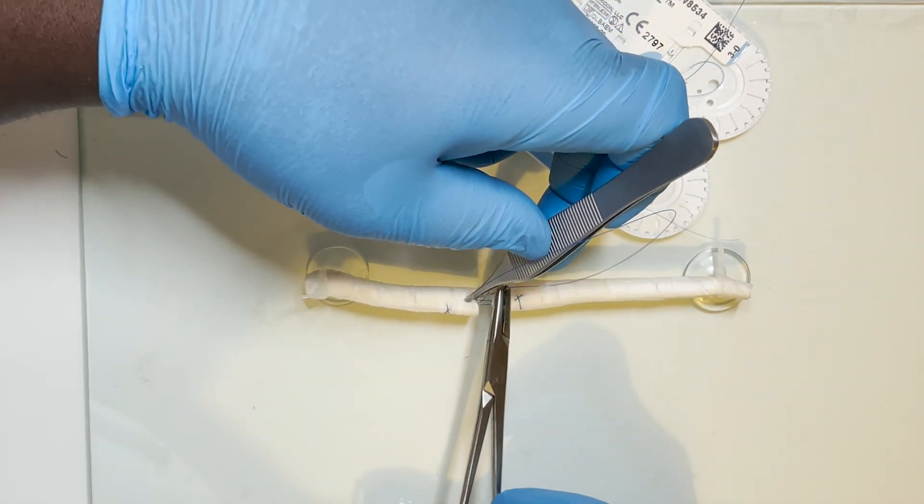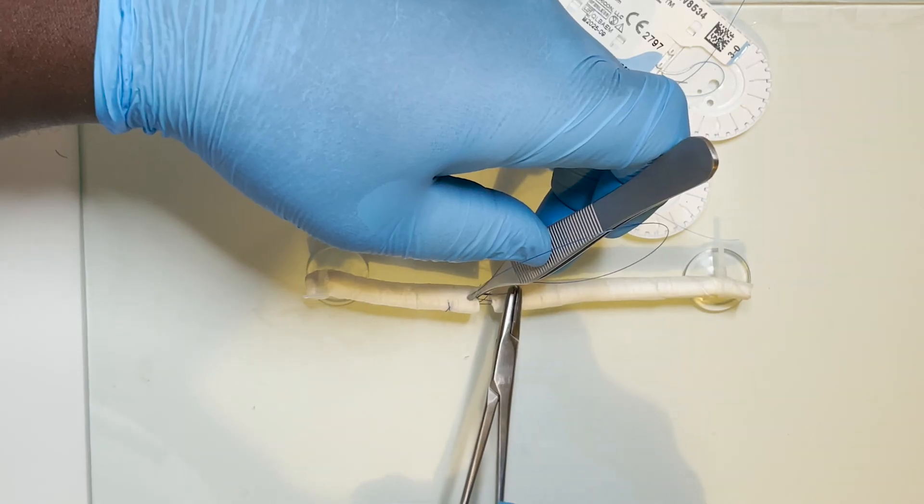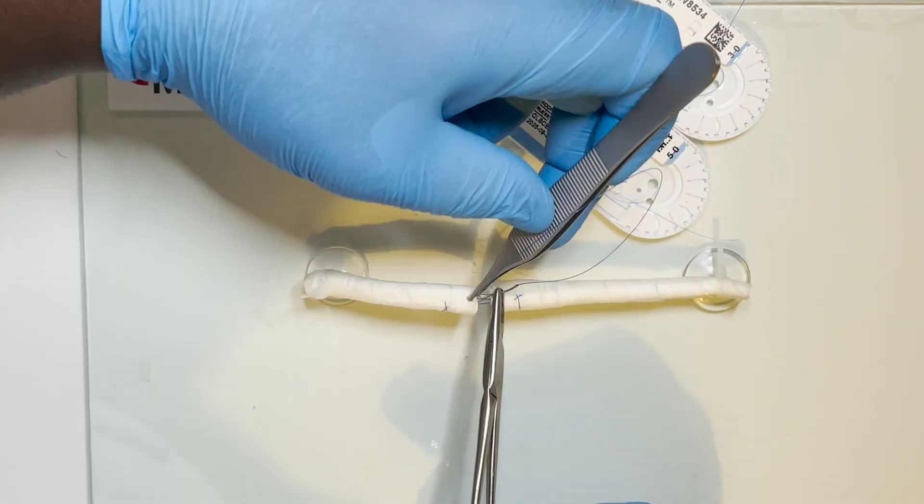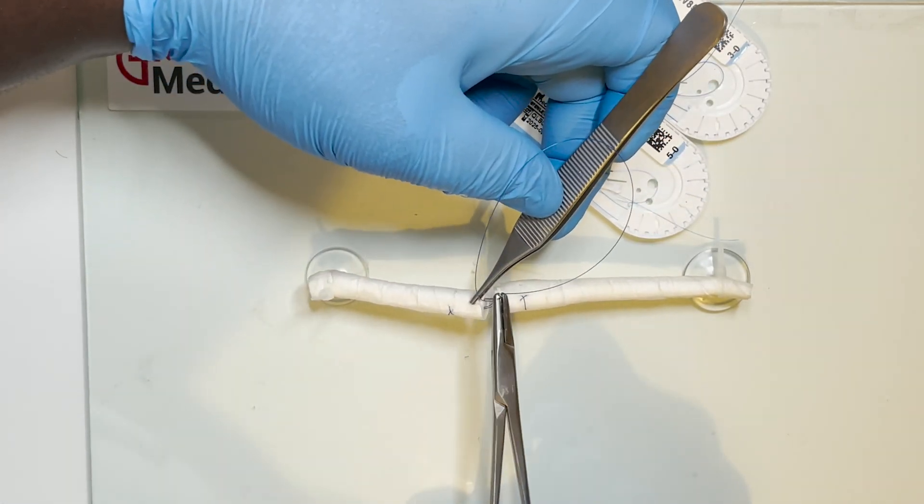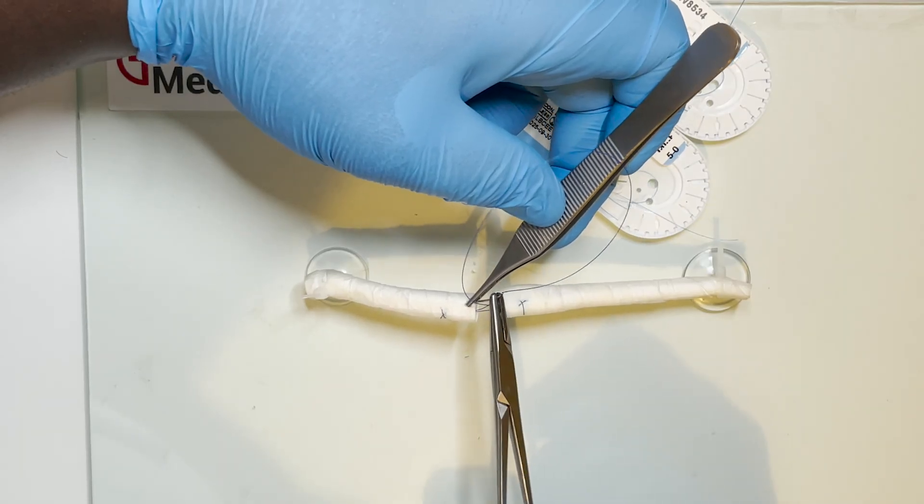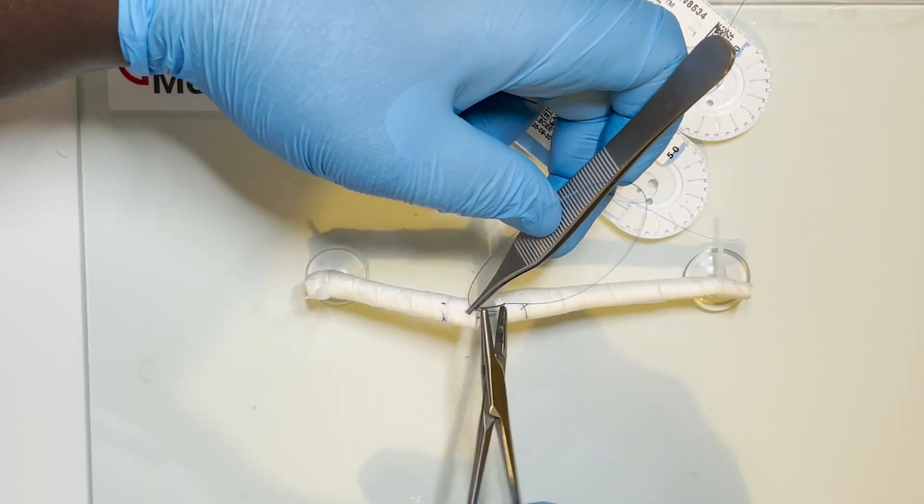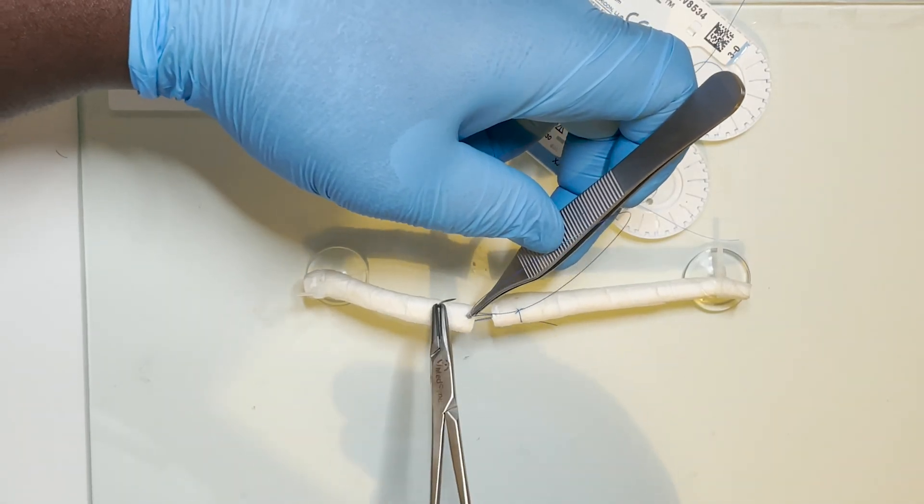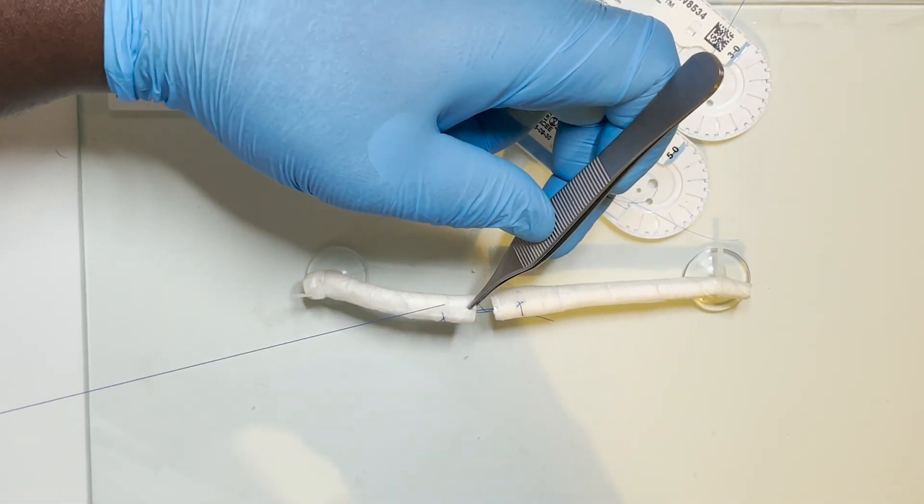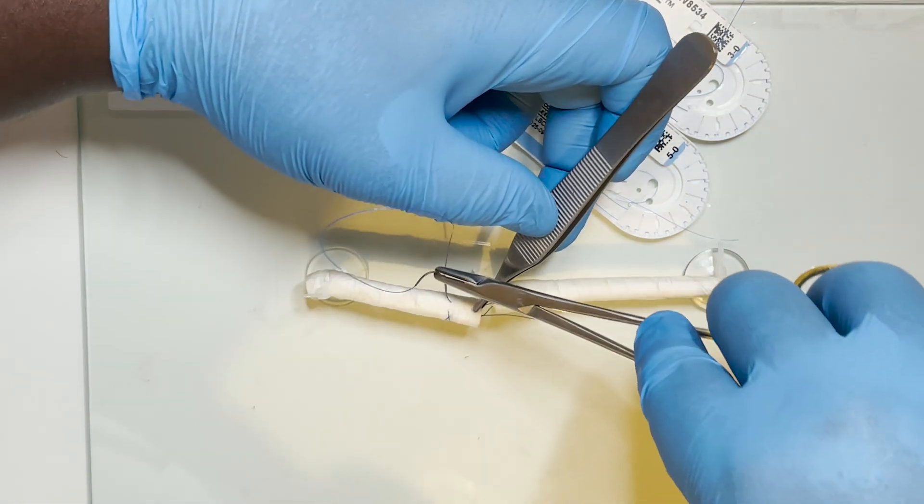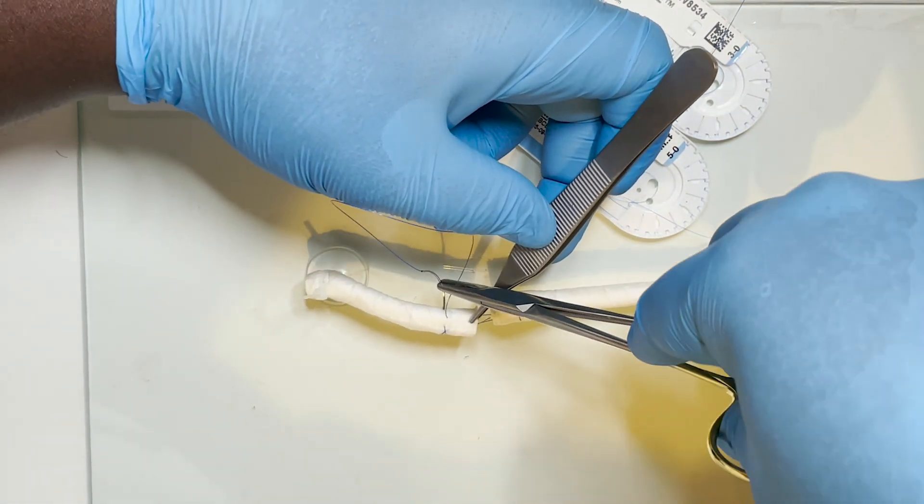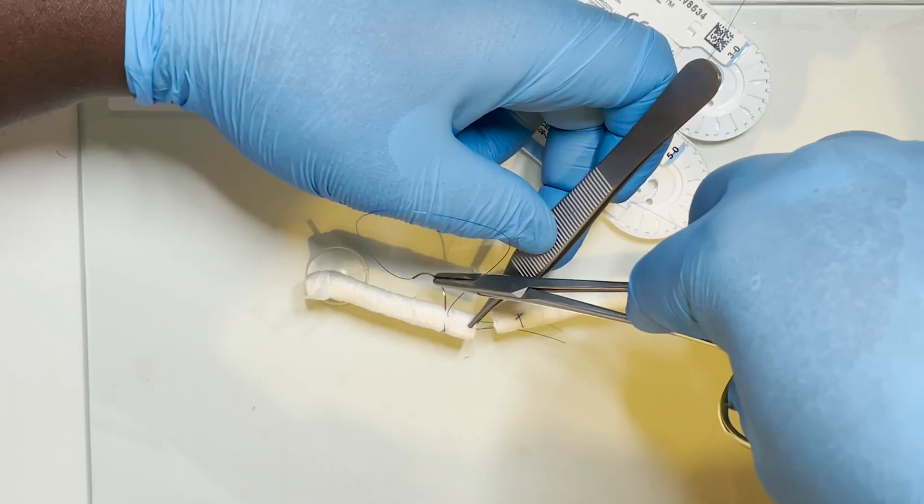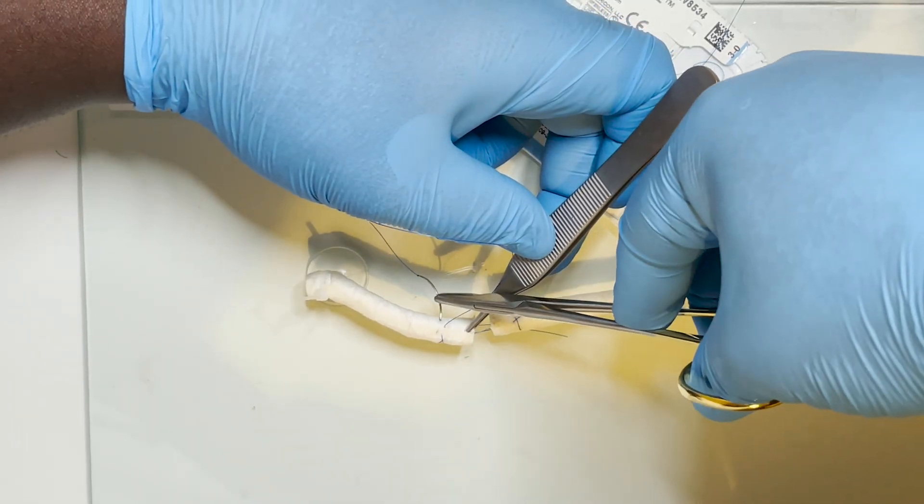The third cross commences with a one centimeter bite longitudinally and more medially within the tendon substance. This is followed by a transverse bite distal to the first suture and towards you.